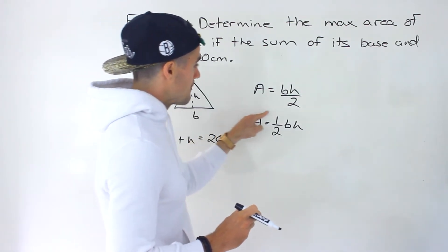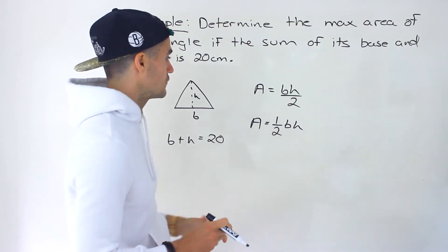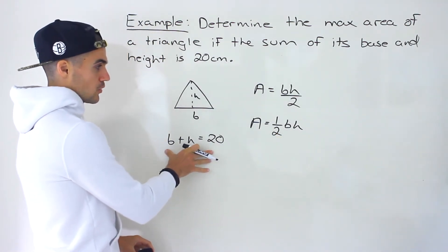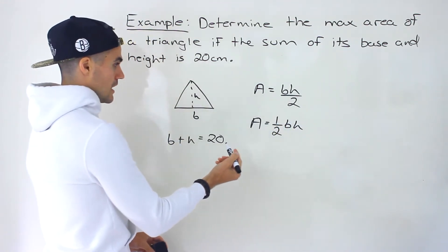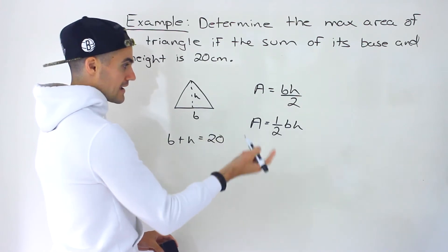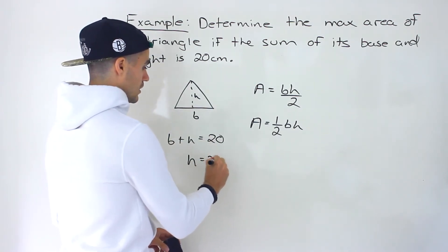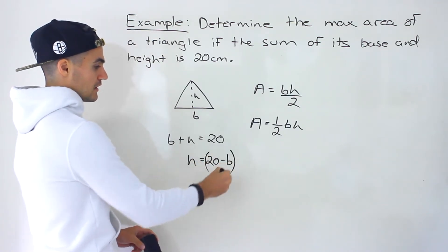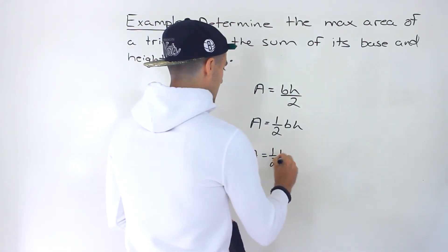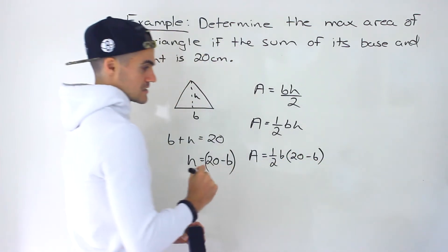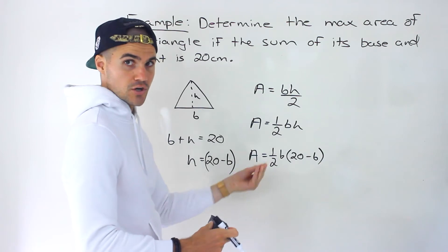We want to find the maximum area, but we're using two variables. We can use the constraint to make it in terms of one variable — I'm going to use the base. So we isolate the height: height equals 20 minus b. Plugging that in, area equals one half times b times (20 minus b). Now we have the area in terms of just the base.